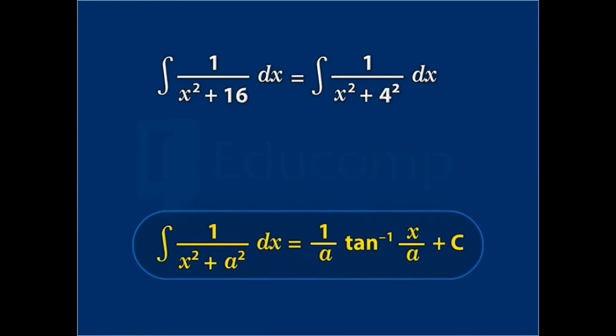We know that the integral of 1/(x² + a²) is (1/a) tan⁻¹(x/a) + C. In the given question, the value of a is 4. So the integral of 1/(x² + 16) equals (1/4) tan⁻¹(x/4) + C.